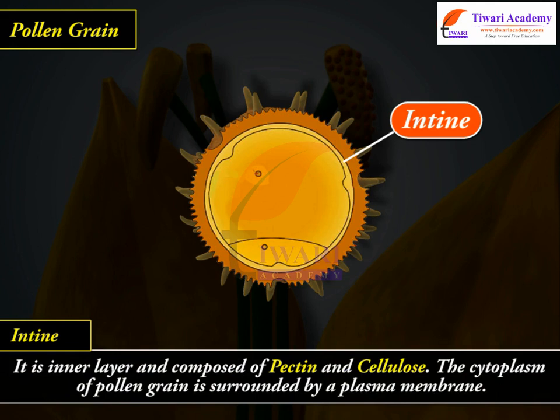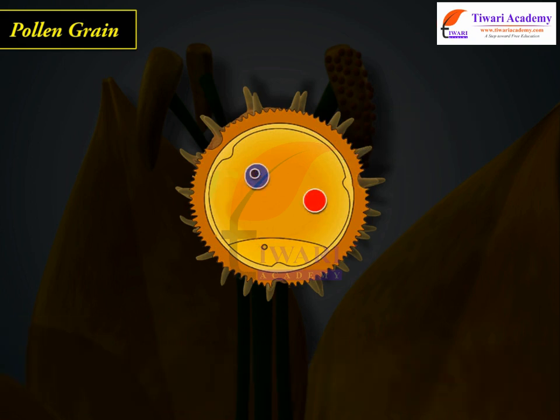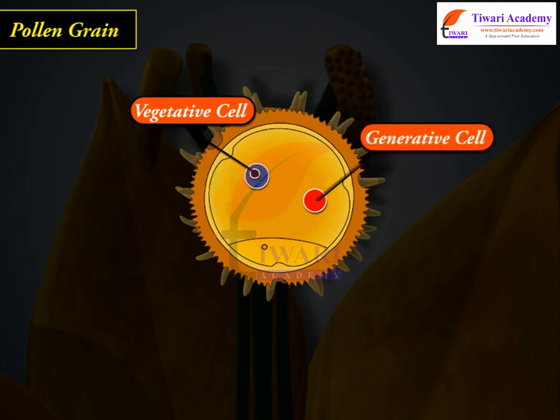The cytoplasm of the pollen grain is surrounded by a plasma membrane. Mature pollen grain has two cells: the vegetative cell and the generative cell. The vegetative cell is bigger and has abundant food reserves and a large, irregularly shaped nucleus.